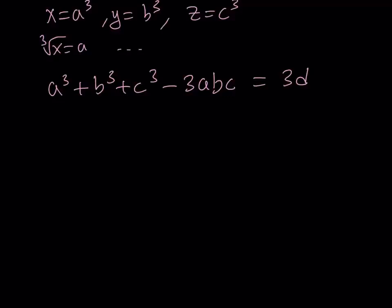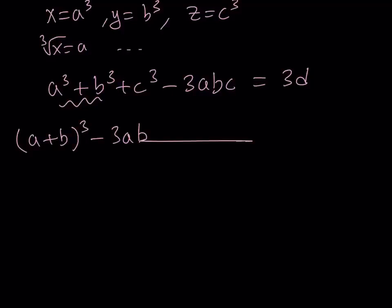This expression on the left-hand side may be familiar if you have dealt with factoring polynomials. We're going to start from scratch and simplify it. I'm going to replace A cubed plus B cubed with the identity: A plus B, quantity cubed, minus 3AB times A plus B. This is equivalent to A cubed plus B cubed, as you can verify by expanding via the binomial theorem.